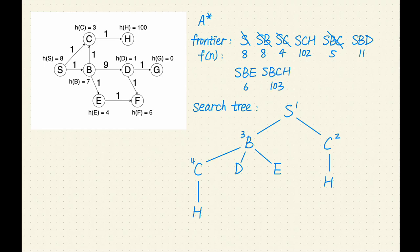Next, SBE has the lowest F value of 6. Let's remove SBE from the frontier. E is not a goal, let's expand it. E has one successor, F. Let's add SBEF to the frontier, with an F value of 9.